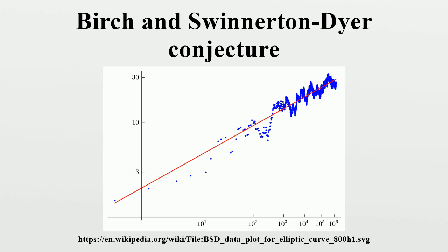Breuil et al., extending work of Wiles, proved that all elliptic curves defined over the rational numbers are modular, which extends the previous results to all elliptic curves over the rationals and shows that the L-functions of all elliptic curves over Q are defined at s equals 1. Bhargava and Shankar proved that the average rank of the Mordell-Weil group of an elliptic curve over Q is bounded above by 7/6. Combining this with the parity theorem of Nekovar and Dokchitser, and with the proof of the main conjecture of Iwasawa theory for GL by Skinner and Urban, they concluded that a positive proportion of elliptic curves over Q have analytic rank 0, and hence, by Kolyvagin, satisfy the Birch and Swinnerton-Dyer conjecture. Nothing has been proved for curves with rank greater than 1, although there is extensive numerical evidence for the truth of the conjecture.